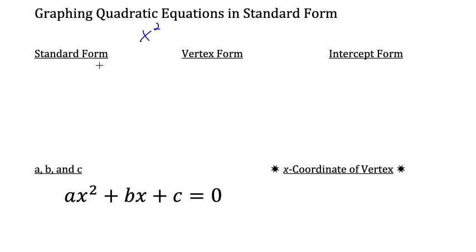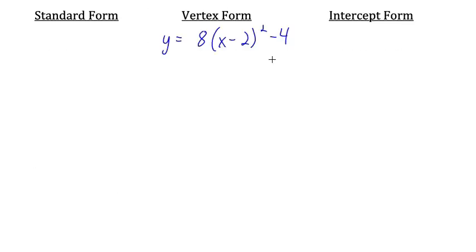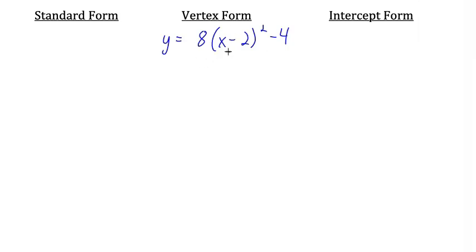Let's start by comparing standard form to two other forms of quadratic equations. This equation is written in vertex form, and one nice thing about vertex form is that just by looking at the equation, we can see what the vertex is. For this equation, the vertex is at positive 2, negative 4. Very handy when graphing.